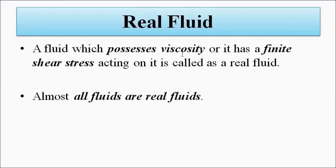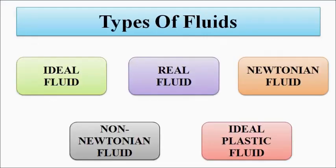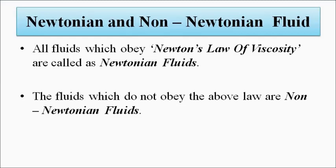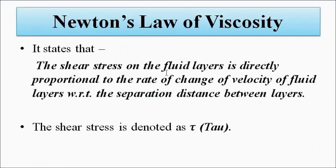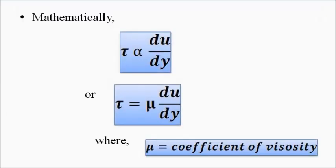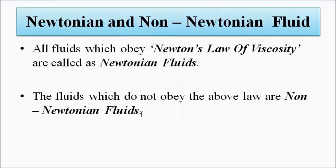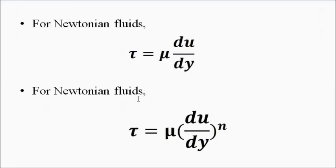Real fluids have a finite amount of viscosity, and all fluids we come across are actually real fluids. Next are Newtonian and non-Newtonian fluids. The fluids which obey Newton's law of viscosity — that is, shear stress is proportional to the rate of change of velocity with respect to the separation distance — are called Newtonian fluids. Fluids which do not obey Newton's law of viscosity are non-Newtonian fluids.